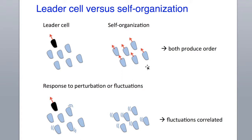How to differentiate the two? We could apply a perturbation and only when the leader cell is affected, the other cells would be affected as well. Or more simply, we look at the fluctuations around the average cell behavior. If they only care about the leader, the fluctuations between cells would be independent. However, when they talk to their neighbors, when there is local communication, you would expect that the fluctuations are also correlated.